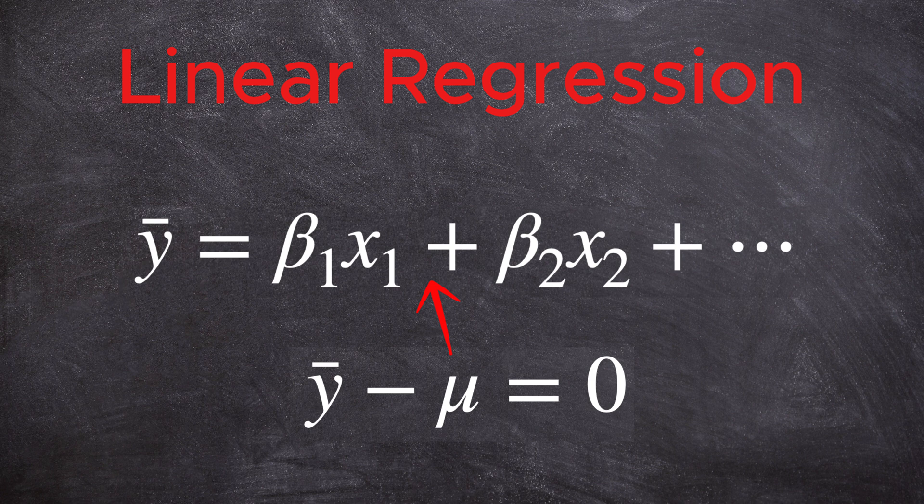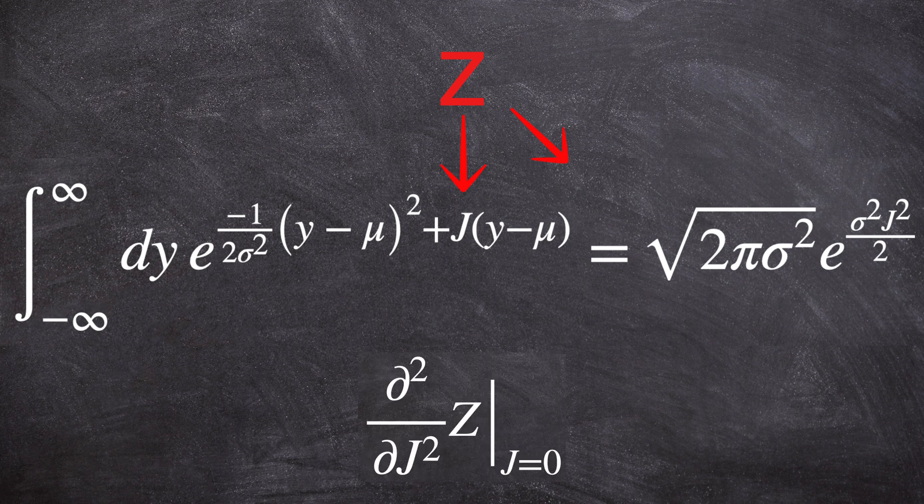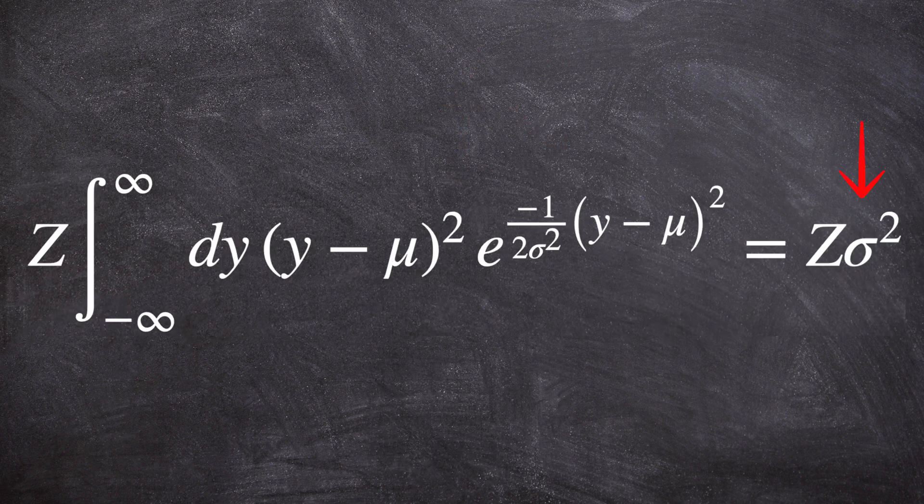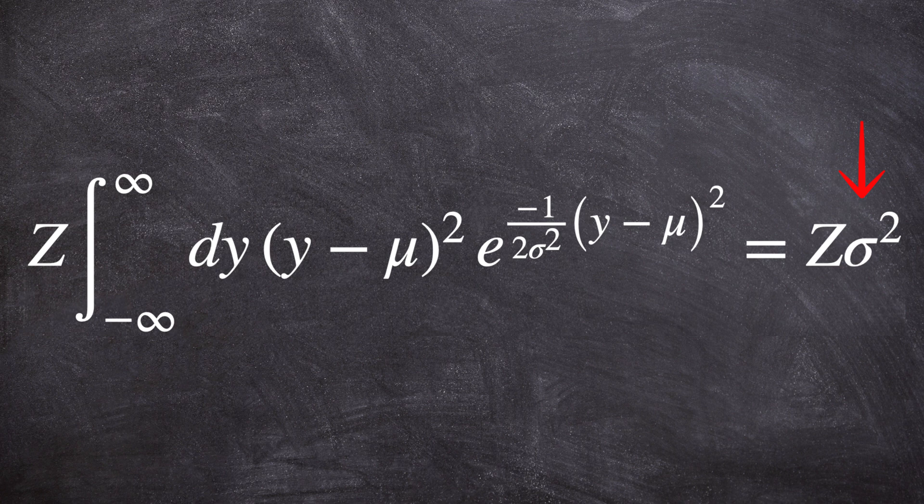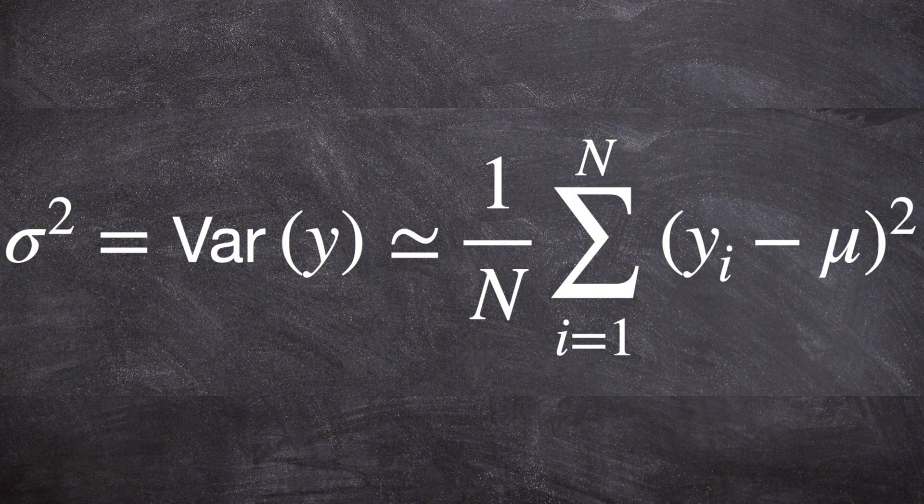To estimate sigma square using data, let's now take a second derivative of the two sides with respect to J, and then set J to zero again. The right hand side is just sigma square times the normalization factor. The left hand side is just the definition of the variance of Y times the normalization factor. So we just proved that sigma squared is the variance of Y. We can now use the law of large numbers to estimate sigma square using our data spreadsheet.